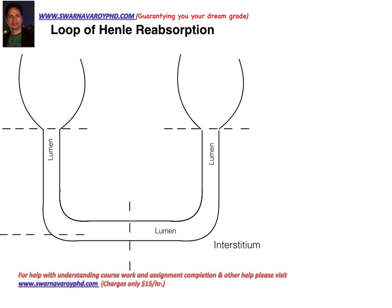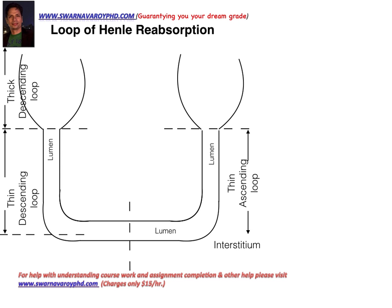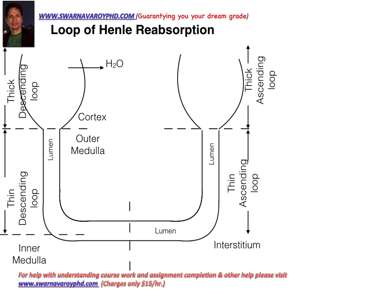The loop of Henle has a thick descending loop, then a thin descending loop, and on the right side you have a thin ascending loop and then a thick ascending loop. You can see the cortex — the outer part of the kidney — then the outer medulla, then the inner medulla, and the interstitium on the right. Remember, the inside of the loop of Henle is the lumen, where urine is formed and passed out of the body. The blood vessels are present on the interstitium side.